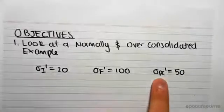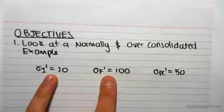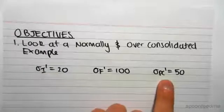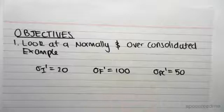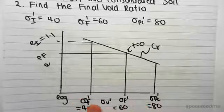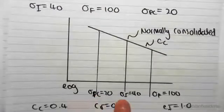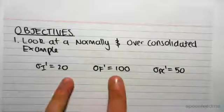You can see now that our pre-consolidated stress is between the initial and final. Whereas in the other examples, in the first example, the over-consolidated example, Sigma PC was the maximum, so it was larger than both of them. In the previous video's example, Sigma PC was smaller than both our values, but now Sigma PC is between our values.